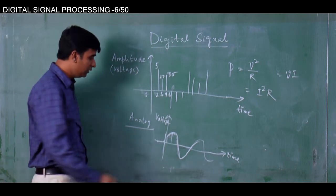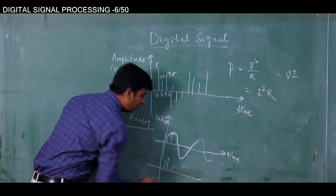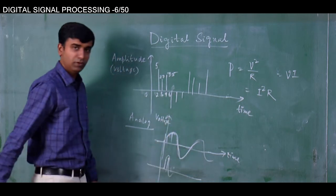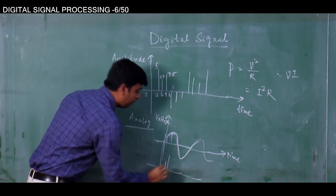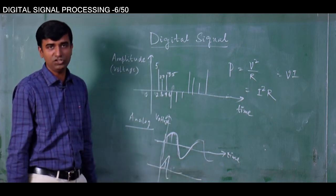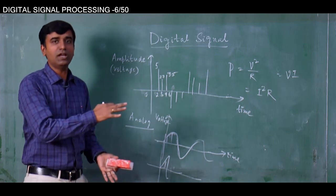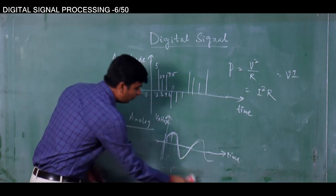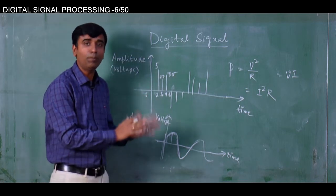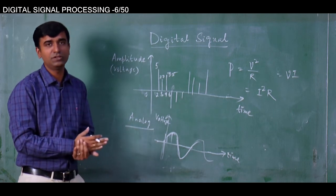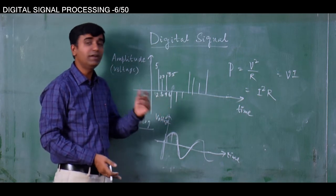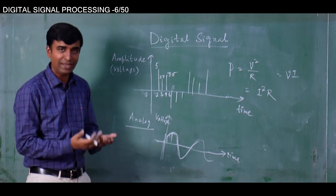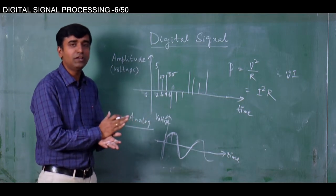If I take only two samples, anyone cannot understand from those two samples what the actual signal was. If you try to draw it, you may reconstruct it incorrectly — for example like this or like that — but it is not the original. So in order to have the original signal reconstructed properly, there must be a minimum number of samples taken. That criterion is called the Nyquist criterion. The scientist Nyquist first derived what is the minimum number of samples one must take to properly reconstruct the original signal.